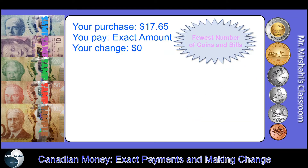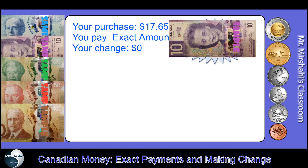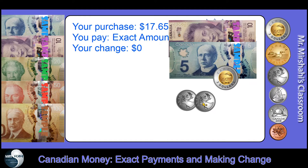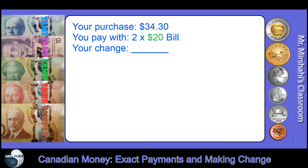Now let's say the same purchase amount but you want to pay the exact amount, so you don't get any change back. So $17.65 — let's see how different it is. You want to go with the highest value bill possible without going over. Obviously a $20 would go over, so I use a $10 — that's $10, then $15, then $17.